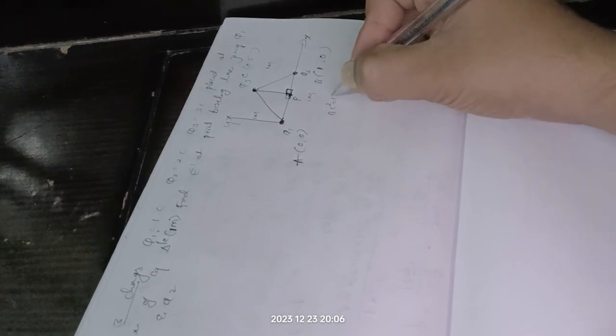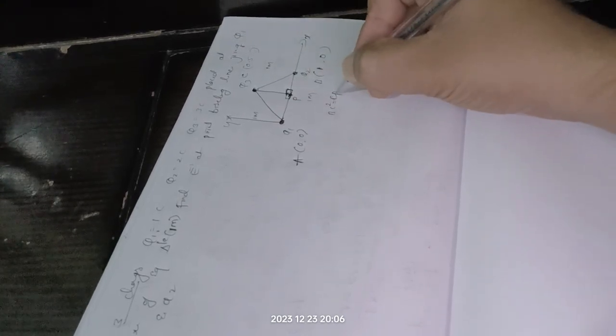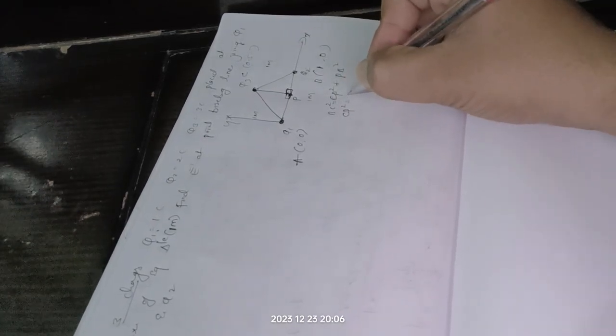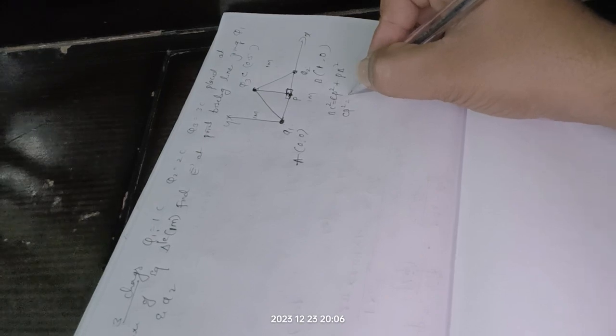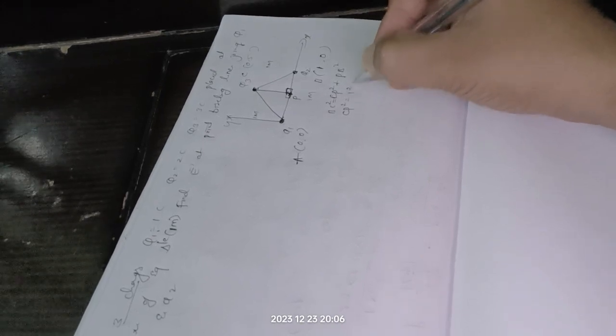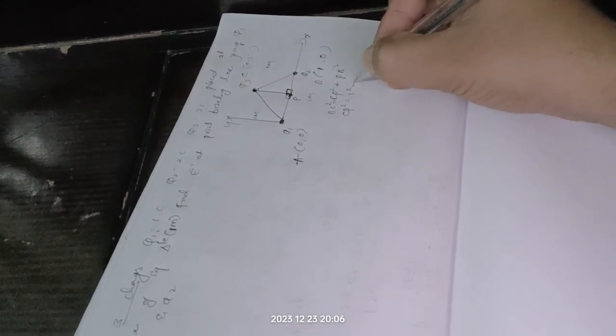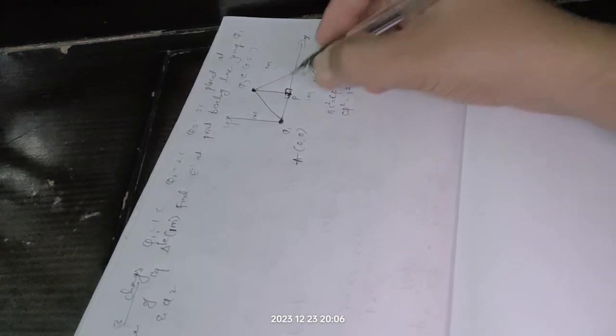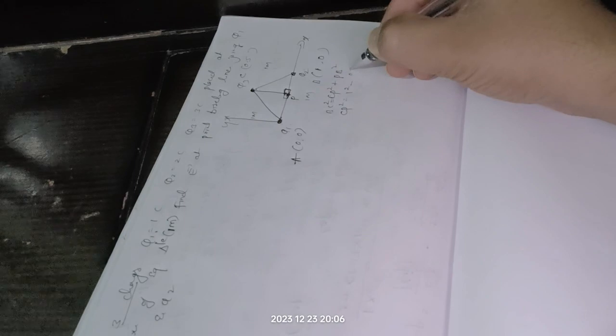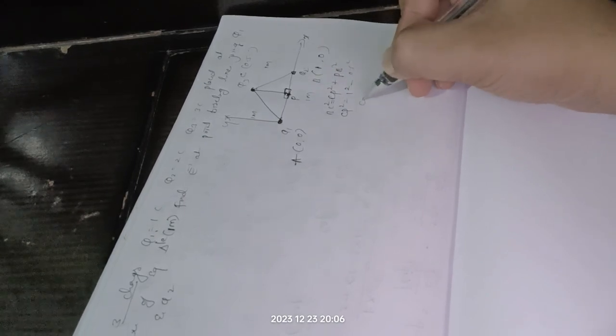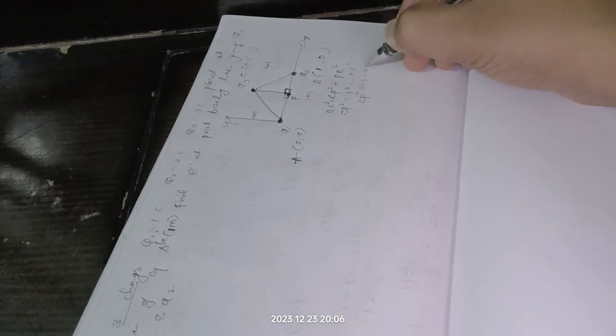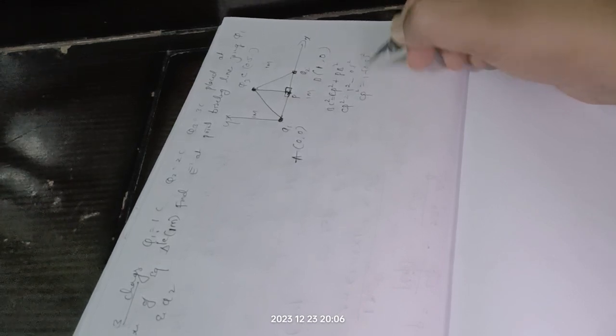BC squared is equal to CP squared plus PB squared. So I want CP squared is equal to BC squared. BC squared value is, what is BC squared value? 1 squared minus PB squared. PB squared is, it is 0.5, so it is 0.5 squared.